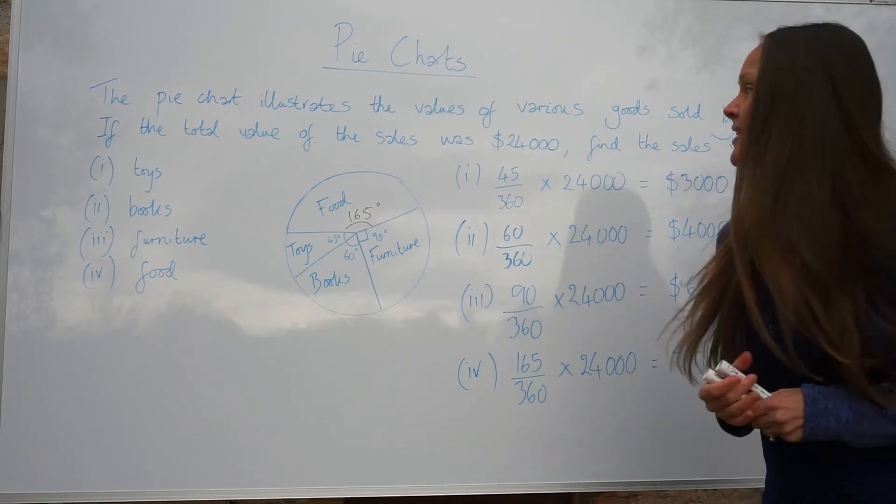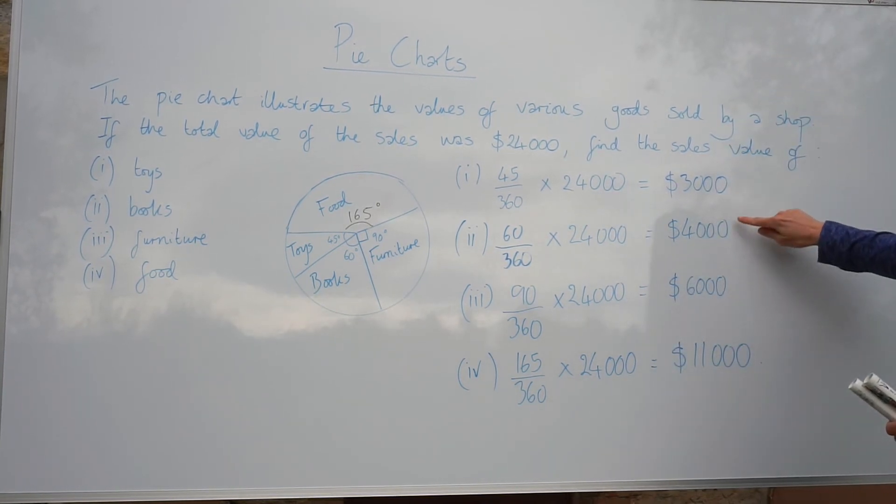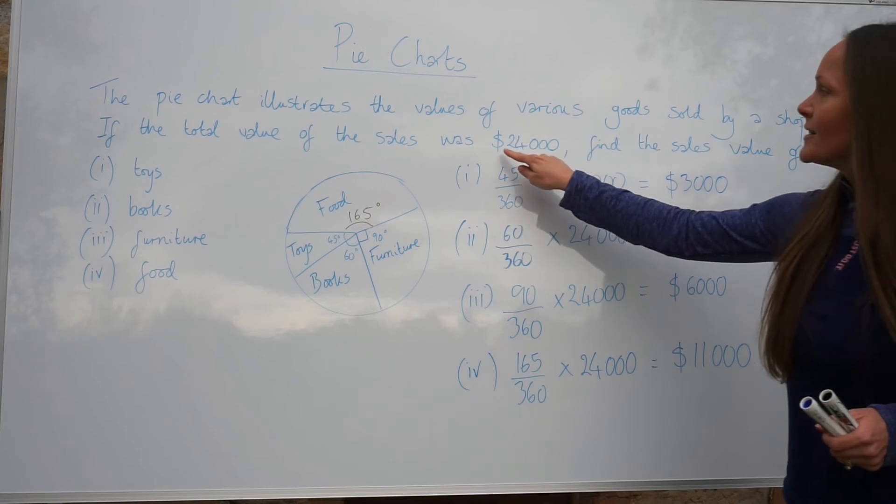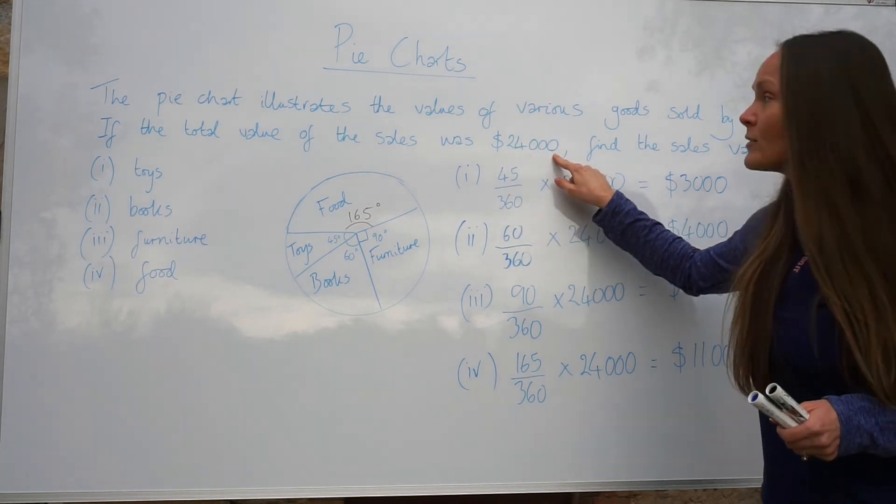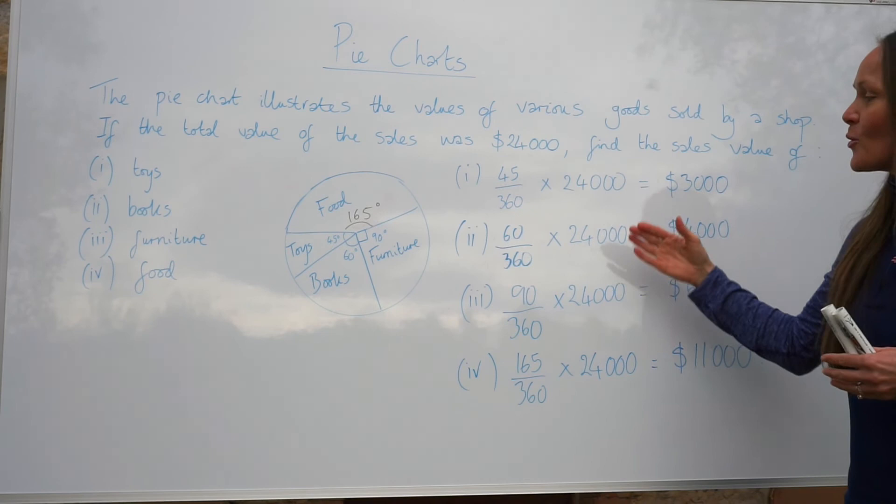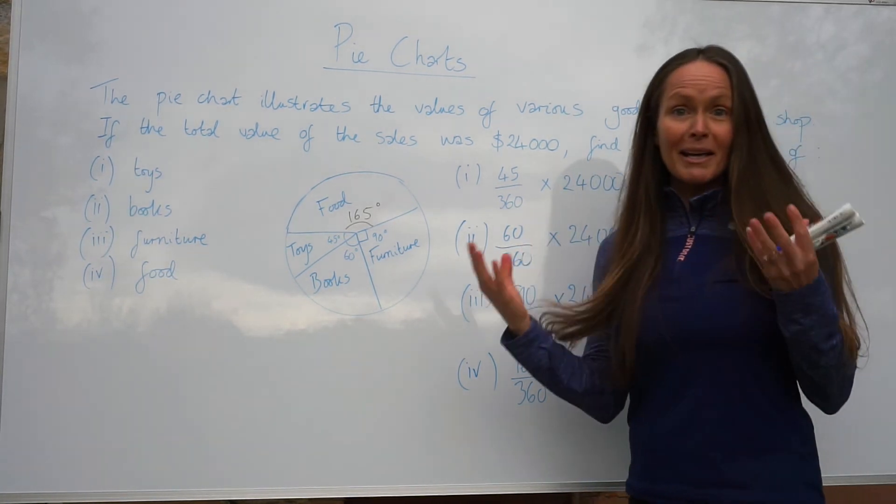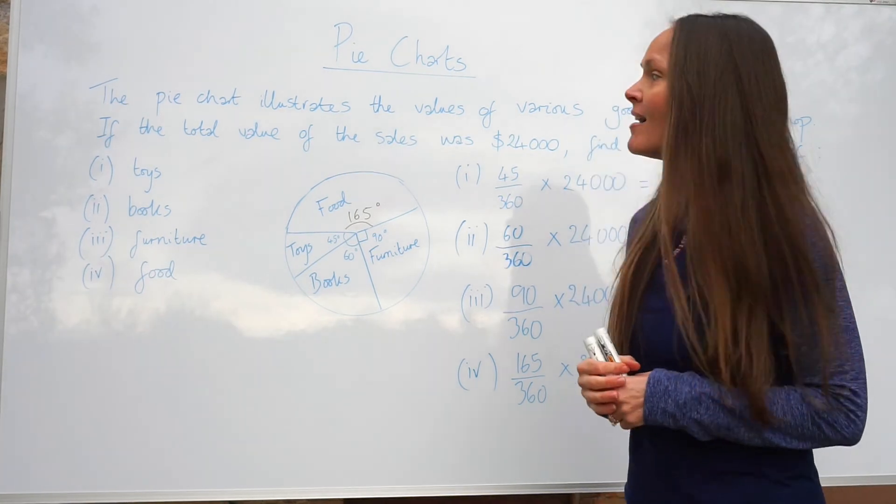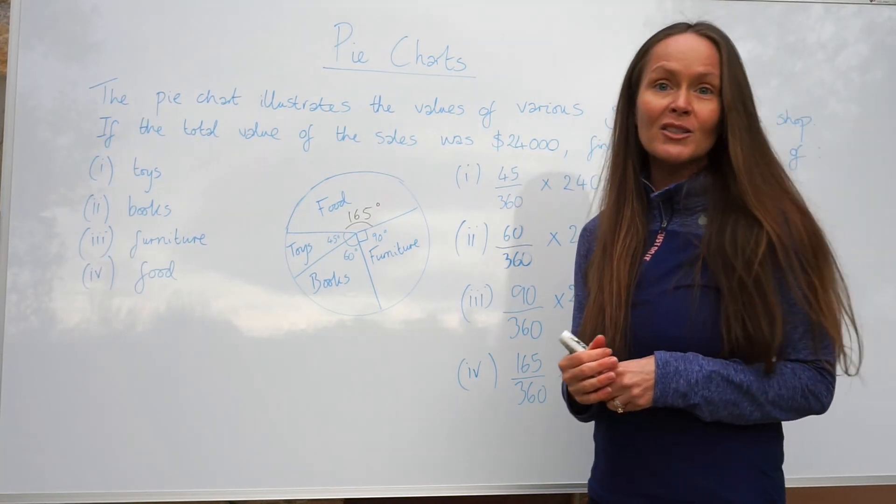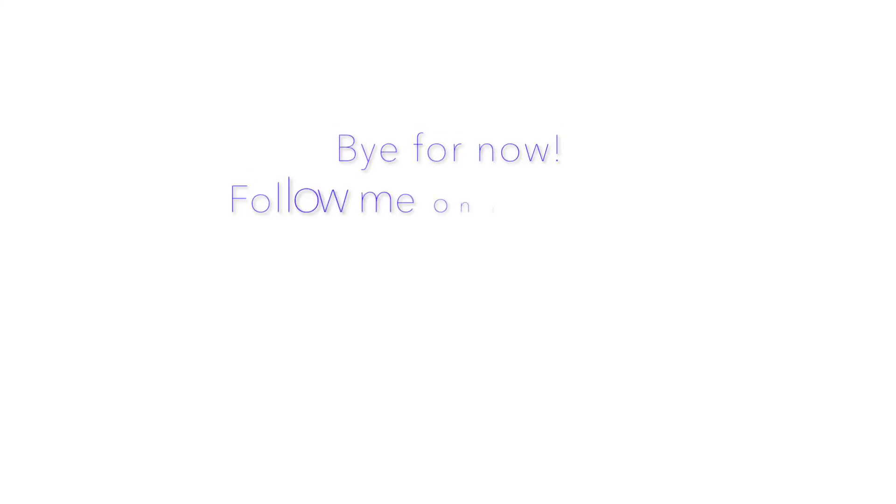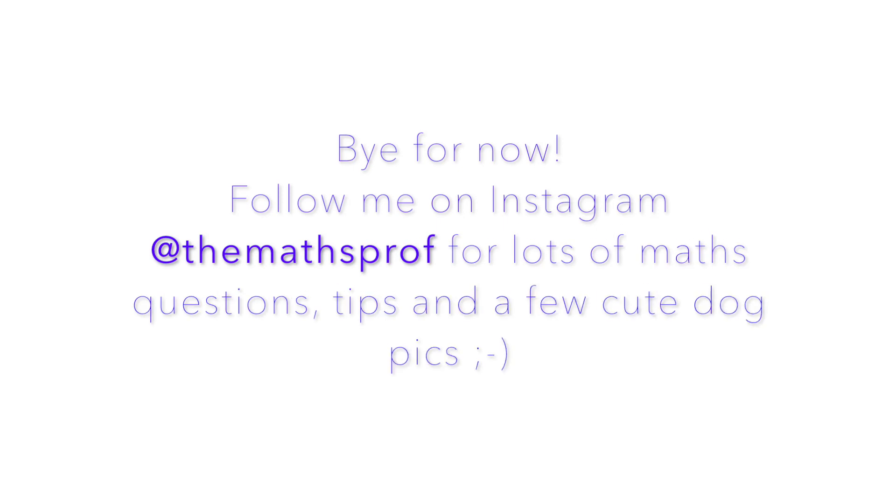So as a quick check at the end of the question, you could just add these up, just to make sure they definitely equal 24,000. If they don't, then you've made a mistake, and you just need to go back and check your working out. So I hope that makes pie charts a little bit easier. I will have some other questions on pie charts coming up soon. I'll see you next time.